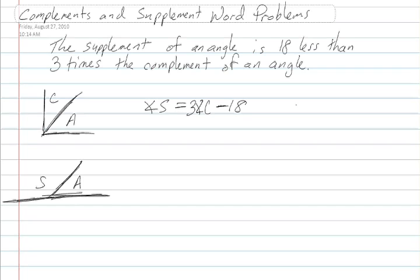A complementary angle sums to 90, so angle A plus angle C is equal to 90. And then we also know that supplementary angles sum to 180, so angle A plus angle S equals 180.